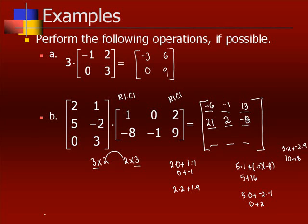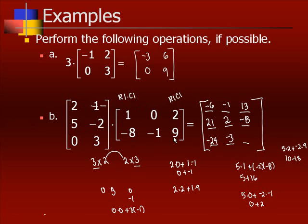Third row, column 1: 0 times 1 is 0, and 3 times negative 8 is negative 24, so that is negative 24. Row 3 times column 2: 0 and 3 times 0 and negative 1, so 0 times 0 plus 3 times negative 1, which is negative 3. You're doing each row times each column systematically. The last entry, row 3 column 3: 0 and 3 times 2 and 9, so 0 times 2 plus 3 times 9, which is 0 plus 27, giving us 27.